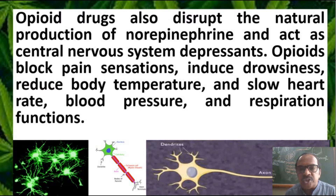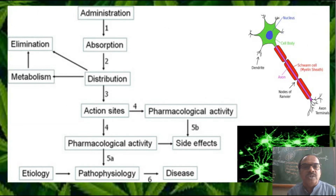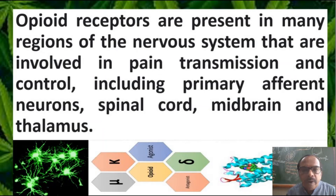Opiates disrupt the central nervous system by blocking pain sensations, inducing drowsiness, reducing body temperature, slowing the heart rate and blood pressure, and affecting the rate of respiration. The outline of drug action involves: administration, absorption, distribution throughout the body, then action begins — with either positive effects or side effects. Opiate receptors are present in many regions of the nervous system involved in pain transmission control, including primary afferent neurons, spinal cord, midbrain, and thalamus.